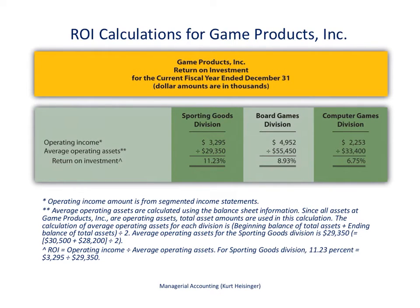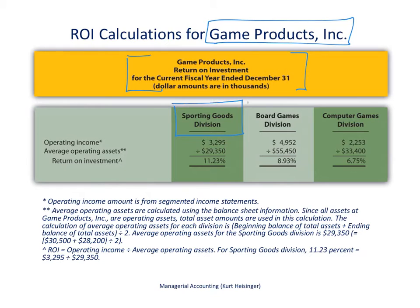Let's formalize this with a consistent company example used across several videos so you can compare different measures for evaluating investment centers. Our company is Game Products Inc., with three different divisions for the fiscal year ended December 31: the sporting goods division, the board games division, and the computer games division. Each division is autonomous with its own manager. We're evaluating how each division is doing because they are investment centers — they control long-term assets, and are responsible for profits and costs.